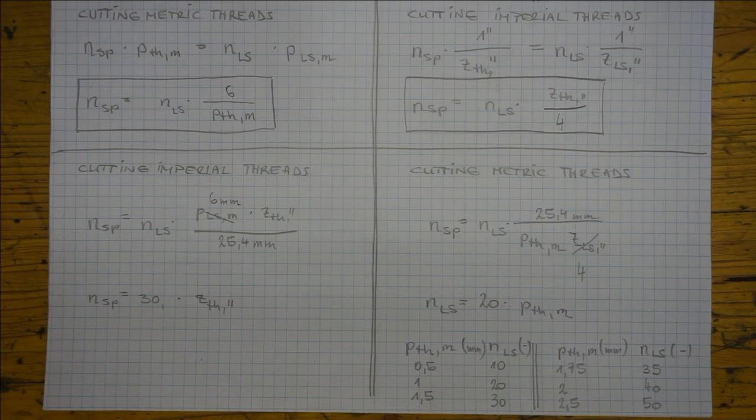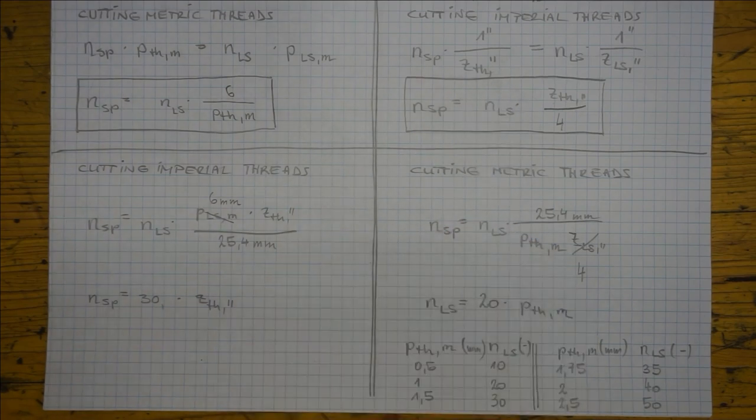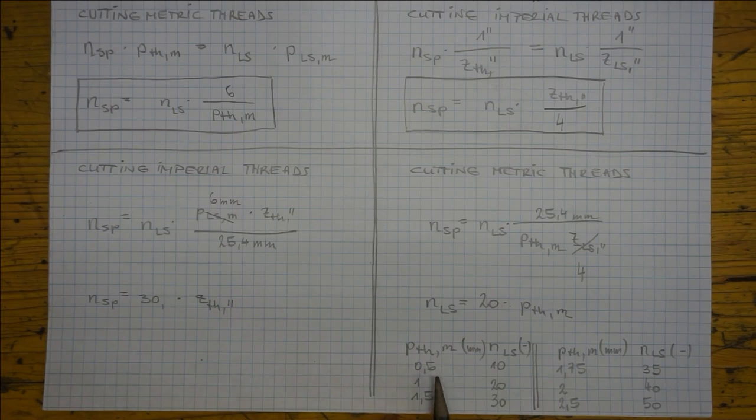So here is the problem. While indexing imperial threads on an imperial lathe is very easy, doing the same for metric threads is difficult. You see I've picked out a few metric pitches here. And plotted the lead screw revolution number. So obviously there is no way around using change gears here for all these different NLS numbers. That is of course if we strive for a purely mechanical indicator.